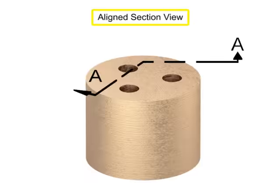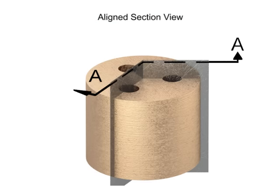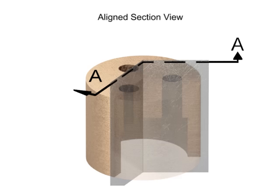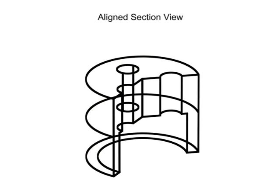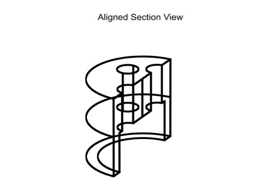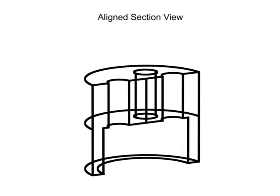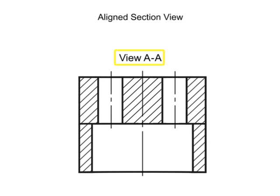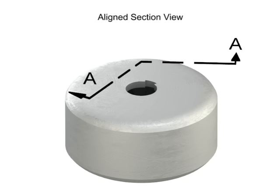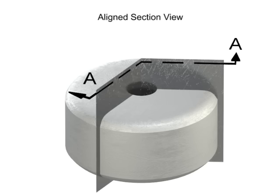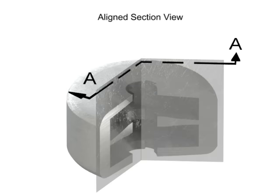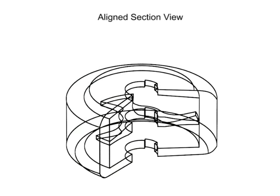Aligned section views occur where the cutting plane bends to pass through specific features of an object, then rotates to a normal vertical or horizontal plane and is projected to the section view. For circular parts, the cutting plane will almost always pass through the center of the part, and then angle to another feature. Aligned views are typically used with complex or circular parts with interior features that do not appear in a straight line.